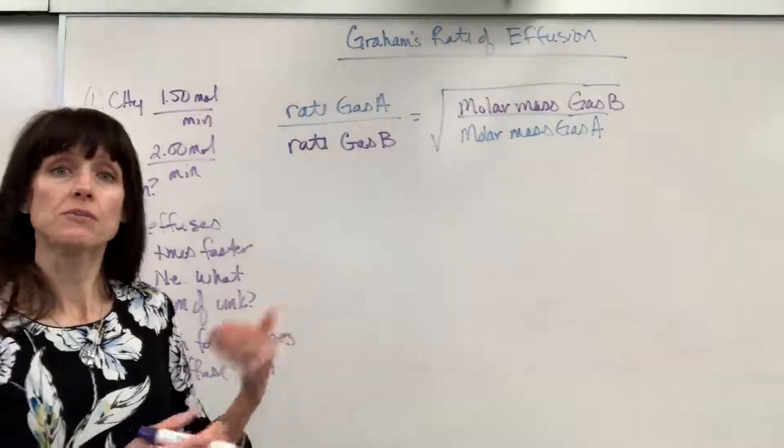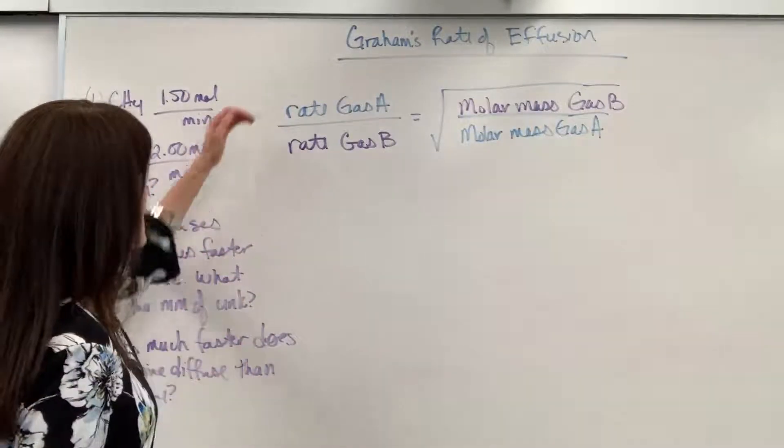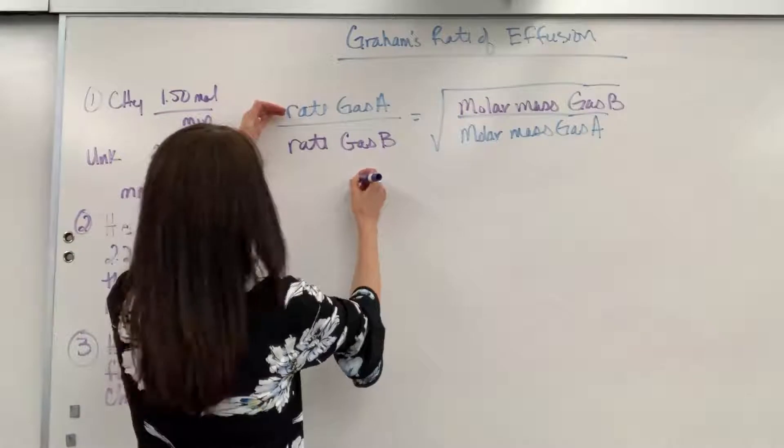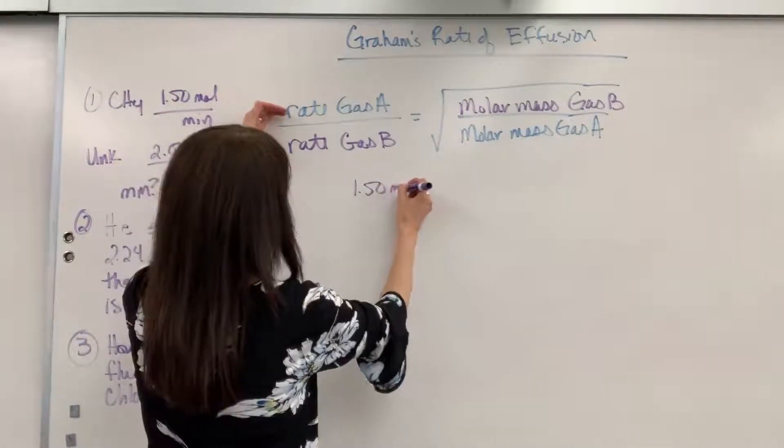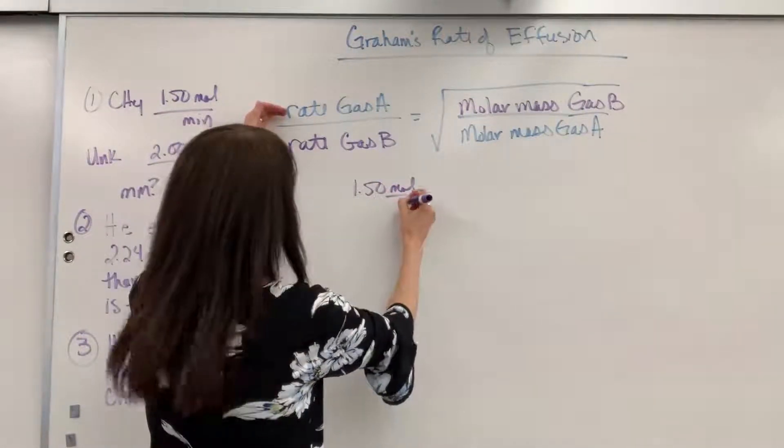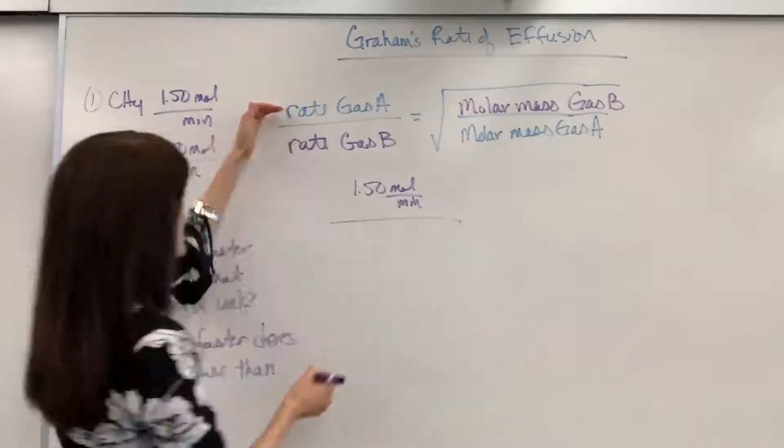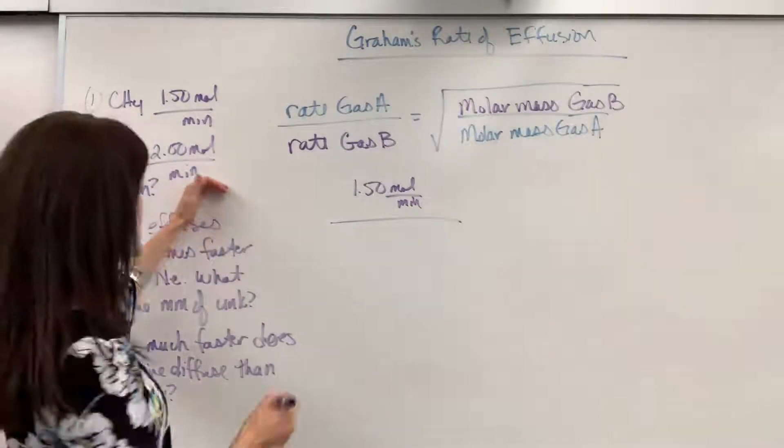So, let's go ahead and plug in what we have. Rate of gas A, this is going to be the methane, will be 1.50 moles per minute divided by gas B. Here's my unknown. This is going to be 2 moles per minute equals.